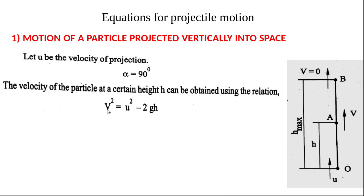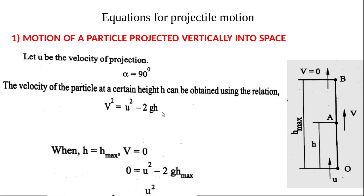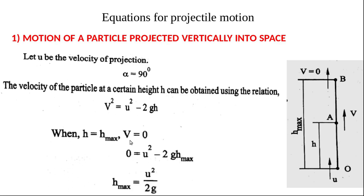For vertical projection, the angle of projection alpha is equal to 90 degrees. We use the equation v² = u² − 2gh. Here v is equal to 0 (final velocity is zero at maximum height) and h is h_max. Substituting these values, we get 0 = u² − 2g·h_max, from which h_max = u²/2g. That is the maximum height for a vertically projected particle.